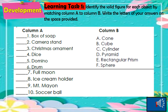Let us now answer learning task 1. Box of soap — E, rectangular prism. Camera stand — D, pyramid. Christmas ornament — F, sphere. Dice — B, cube. Domino — E, rectangular prism. Drum — C, cylinder. Full moon — F, sphere. Ice cream holder — A, cone. Mount Mayon — A, cone. Soccer ball — F, sphere.